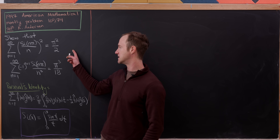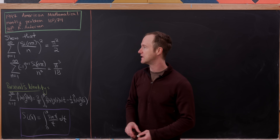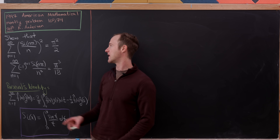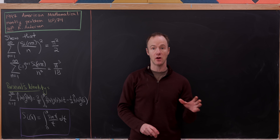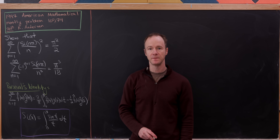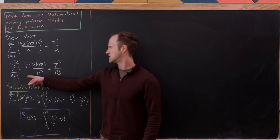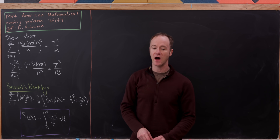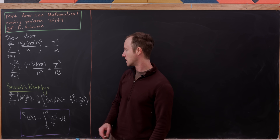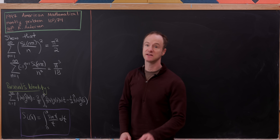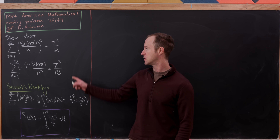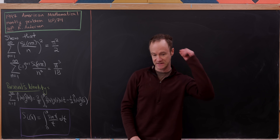What we'll show is that the sum as n goes from 1 to infinity of the sine integral evaluated at nπ over n, all squared, is π²/2. And then we'll show that the sum as n goes from 1 to infinity of (-1)^(n+1) times the sine integral evaluated at nπ over n, cubed, is π³/18.